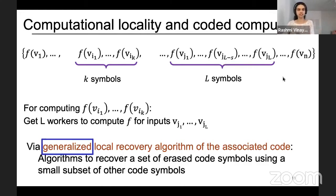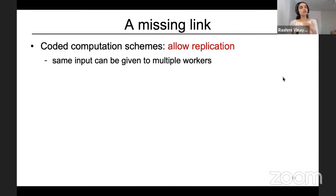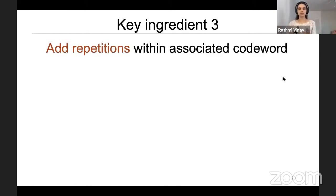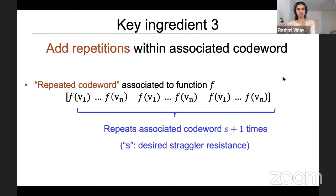This decoding happens via generalized local recovery algorithms of the associated code — algorithms to recover a small set of erased code symbols using a small set of other code symbols. Coded computation schemes also allow replication. The way we defined the associated codeword prohibits replication, so the third ingredient is to add repetitions within the associated codeword. The repeated codeword has s plus 1 repetitions of the original vector, where s refers to the desired straggler tolerance.